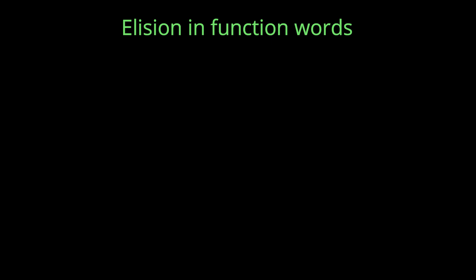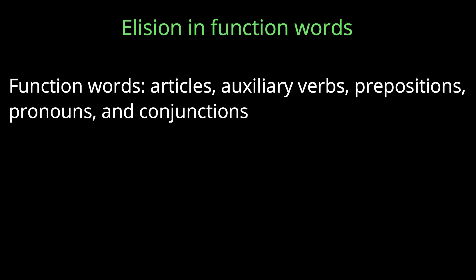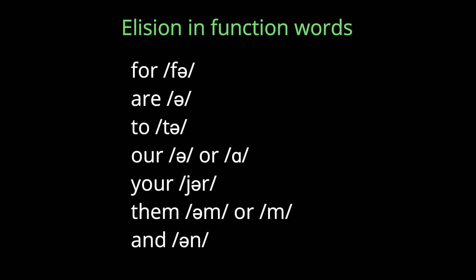One common elision happens with function words. Function words are words that relate to grammar, like articles, auxiliary verbs, prepositions, pronouns, and conjunctions. These words lose some consonants or even a syllable in natural speech.